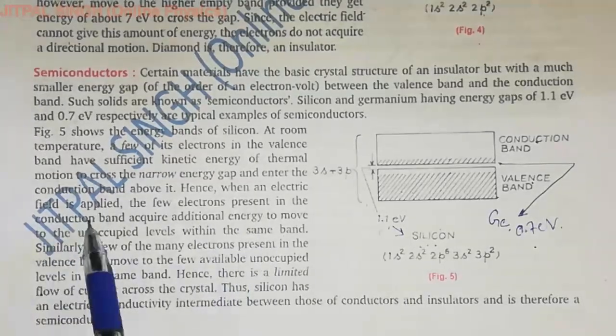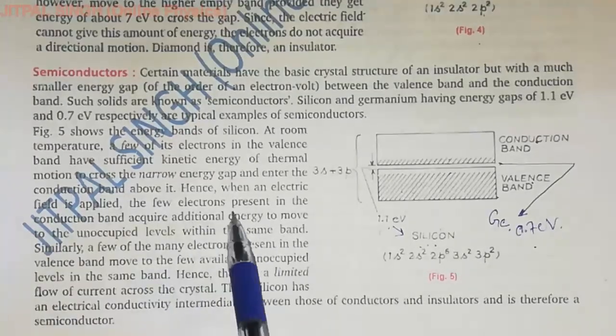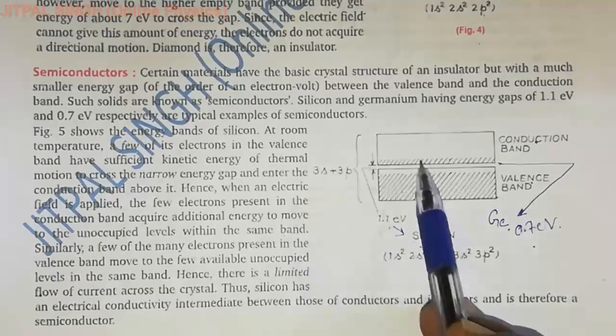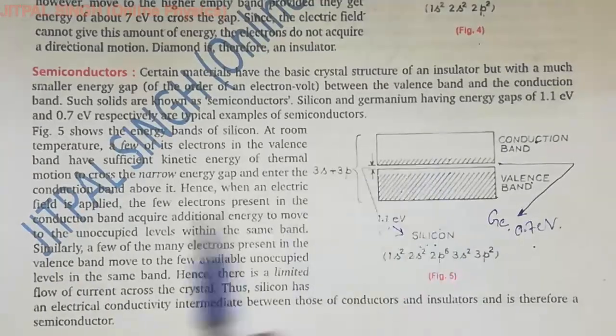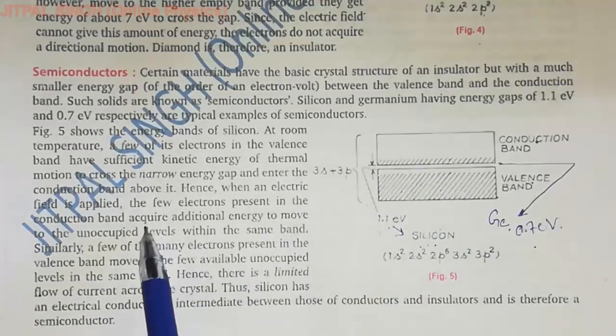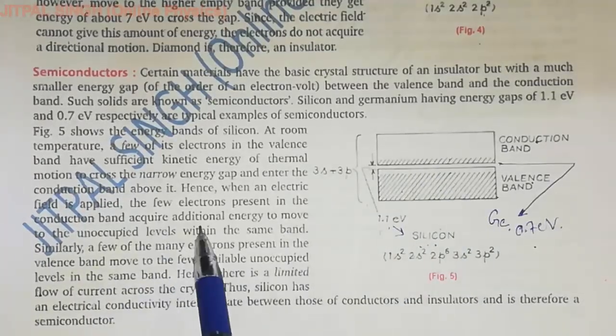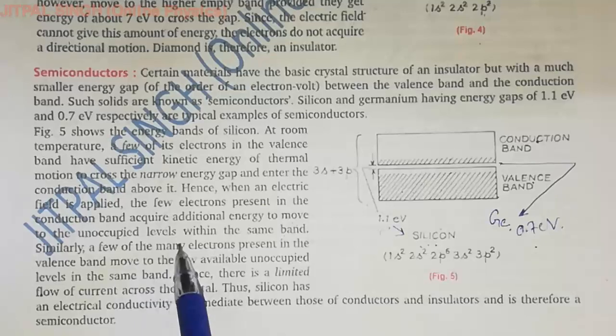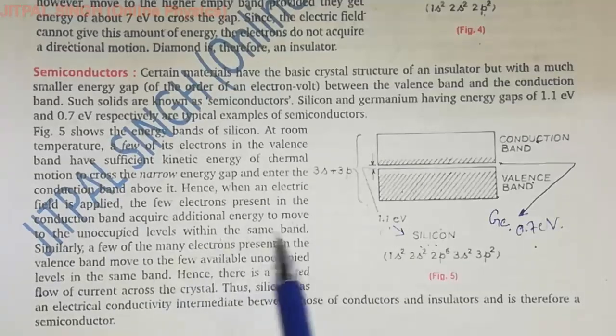When an electric field is applied, a few electrons present in the conduction band acquire additional energy to move to the unoccupied levels within the same band.